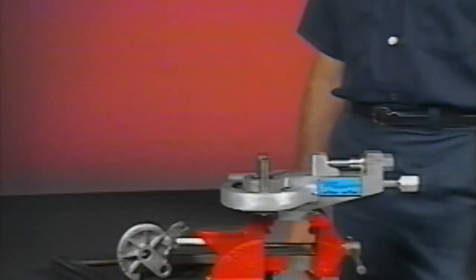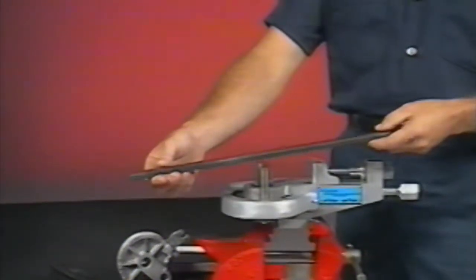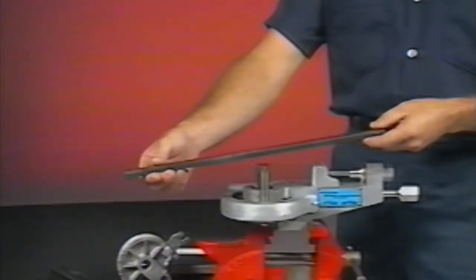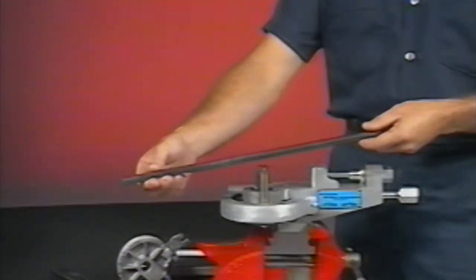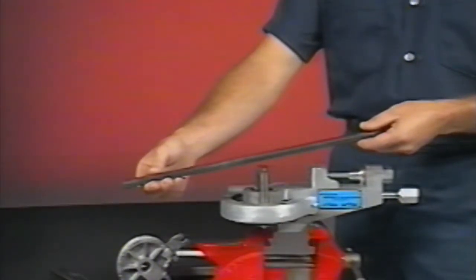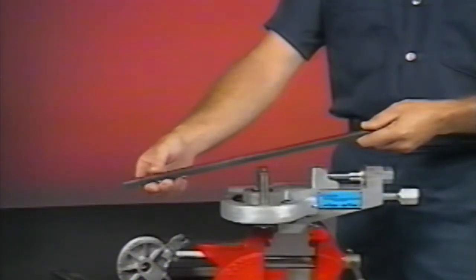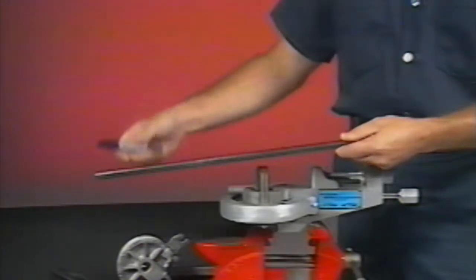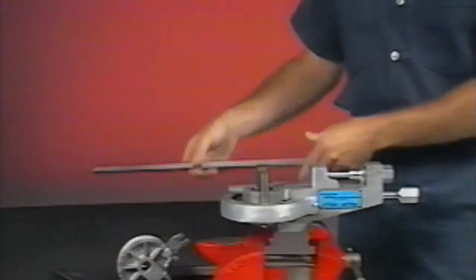To operate the model 416, there are four basic steps. Step one, select your tubing and mark the bend starting point. We've selected a size eight or half-inch OD annealed tube. Annealing is a process that softens the tube to make bending easier. It also reduces the amount of spring back after the bending process. Mark the tube where the bend is to start with a pencil or other marking pen. Do not cut into the tube surface in any way as this will form a weak spot in the tube.